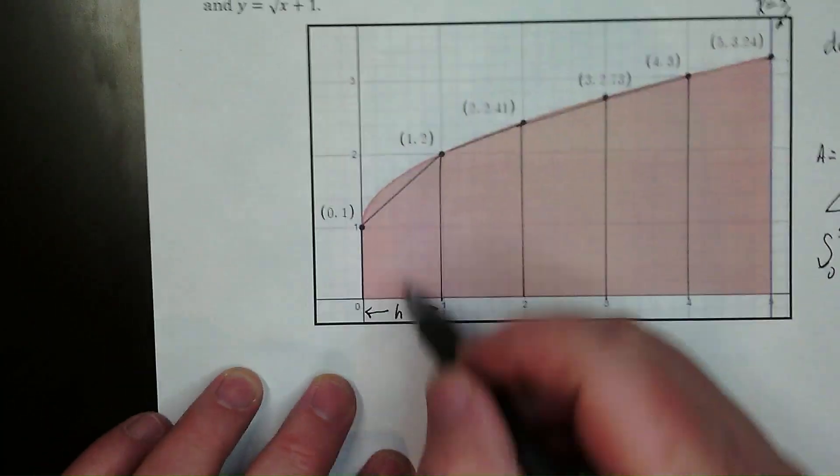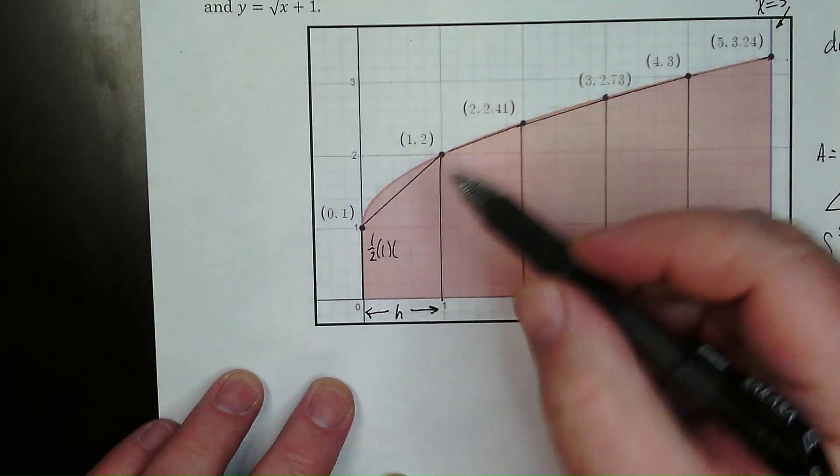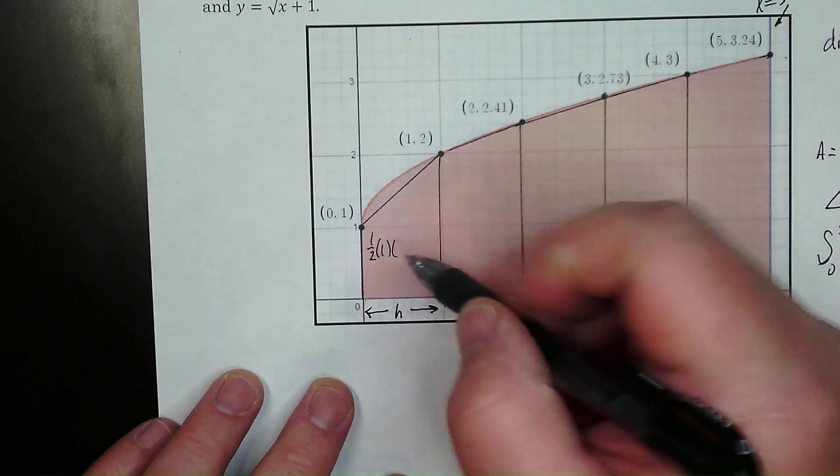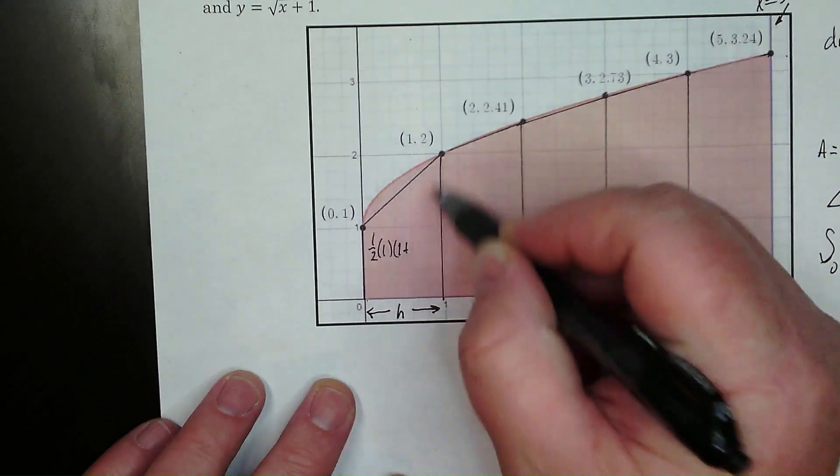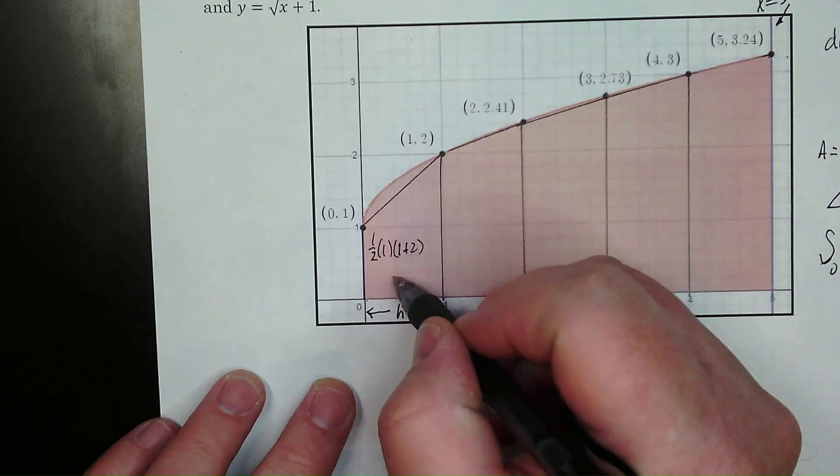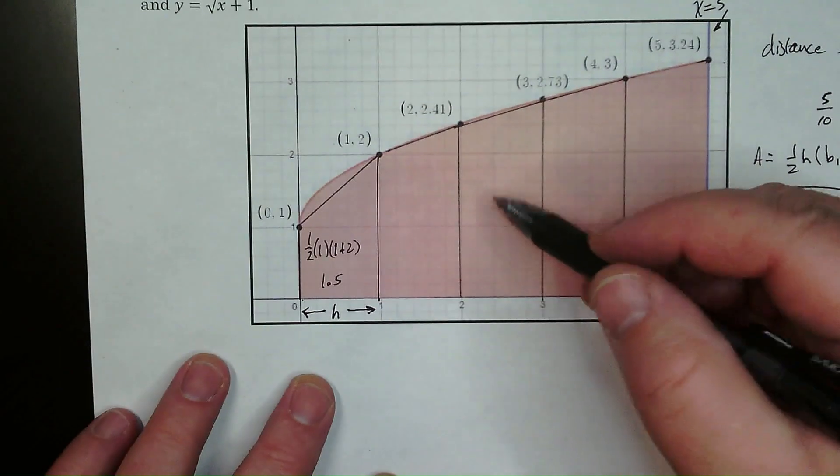This first one right here if we look at it what we have is we have one half times one and then plus the bases. So this base right here is one plus two. So that's three. One half times three is three. Three over two is 1.5. So let's do the next one right here.